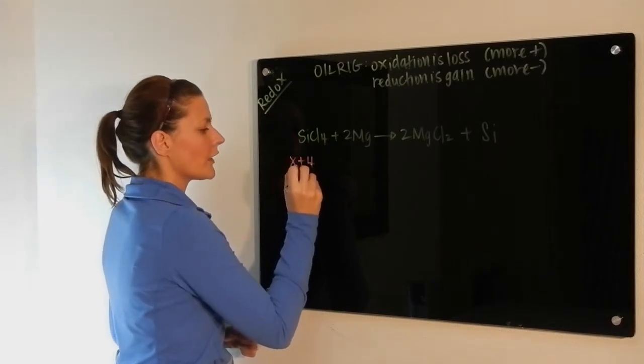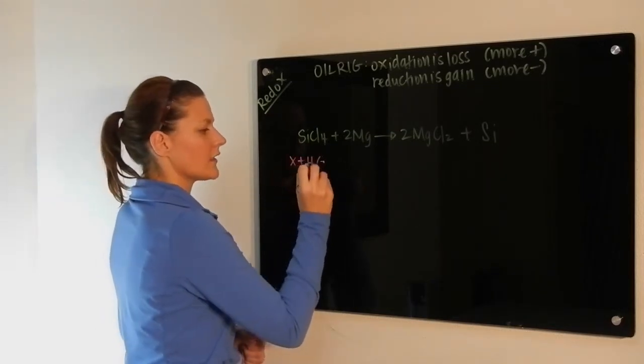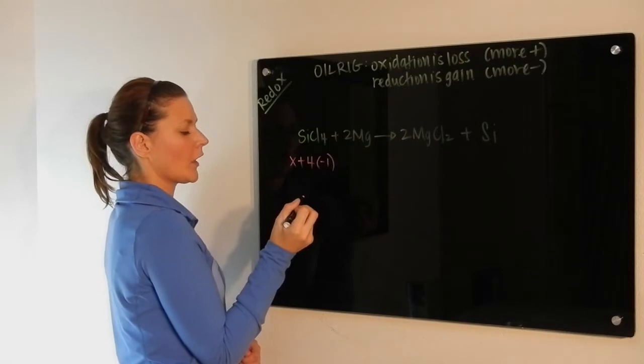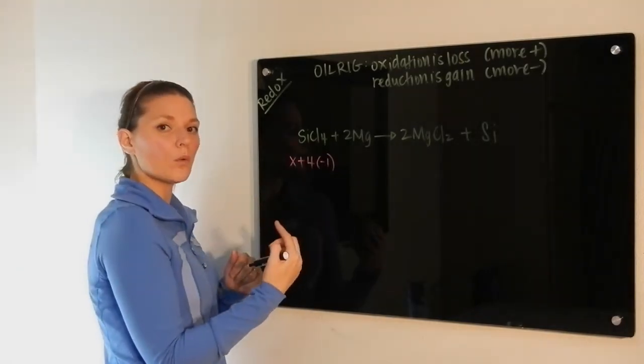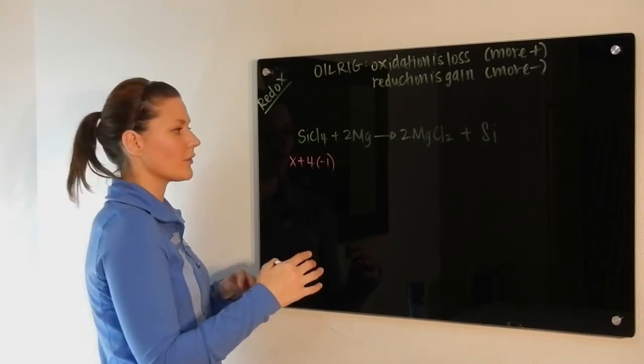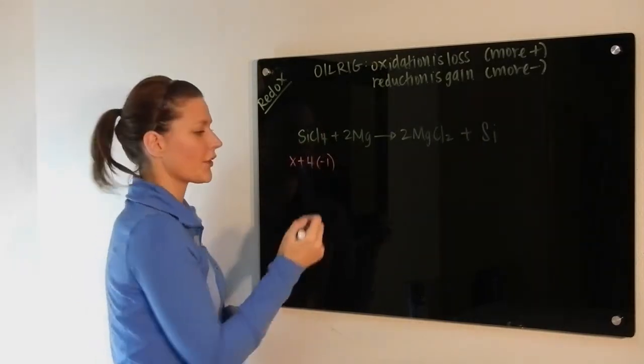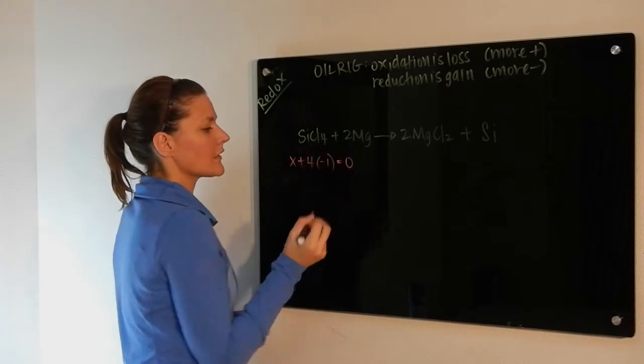We have four chlorines, and each one is assigned an oxidation of negative one. When you add those oxidation numbers together, they have to equal the overall charge on the compound. This compound is neutral, it has no charge, so they would have to equal zero.